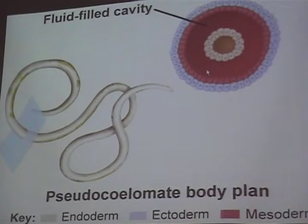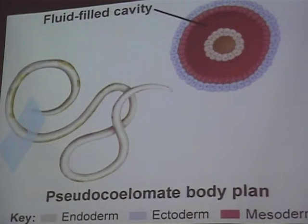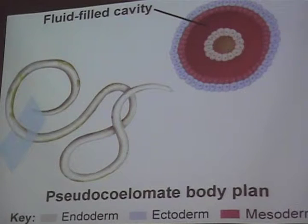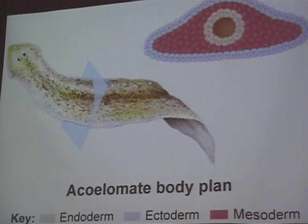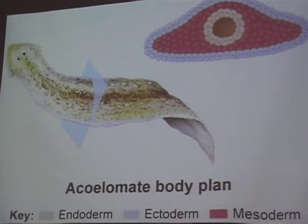Roundworms like heartworms that your dog can get have pseudocoeloms. We and earthworms and the more advanced animals have true coeloms. Pseudo means false — you can remember that because pseudonym is like a pen name. Now here's an acoelomate — this is a flatworm. Ectoderm on the outside, mesoderm in the middle, endoderm on the inside. No body cavity — there's no space anywhere. If it has all three cell layers but no space, it's an acoelomate. A means no — no coelom. Flatworms have that.